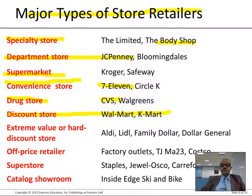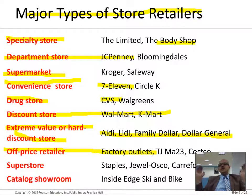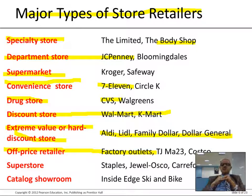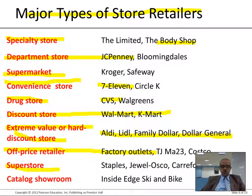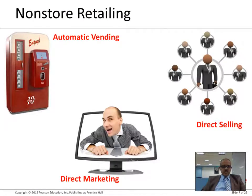Extreme discount stores sell very cheap or very low-priced products. Off-price retailers, like a Nike factory outlet, sell products the normal stores don't carry — perhaps overproduced or unsold items. Superstores are huge hypermarkets, and catalog showrooms let customers choose from a catalog.